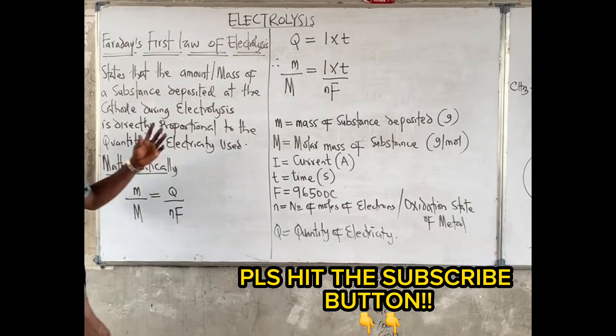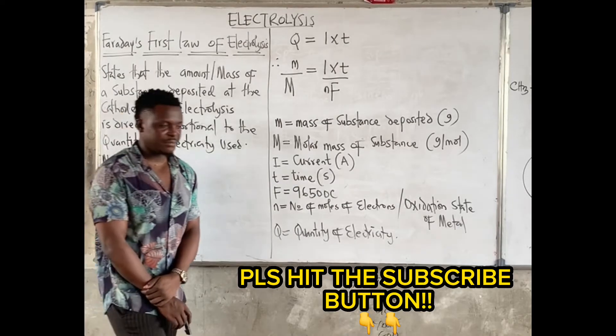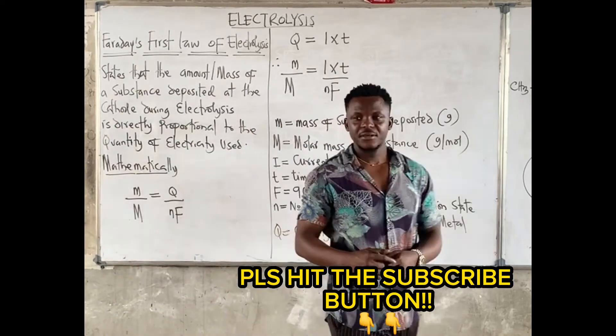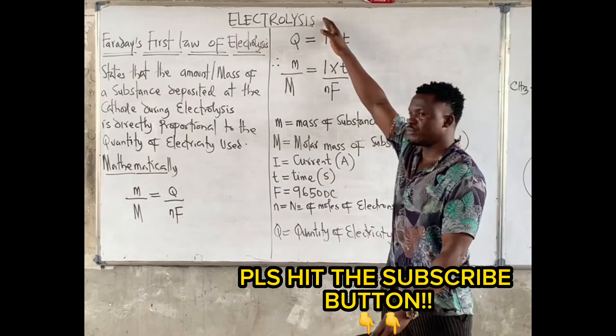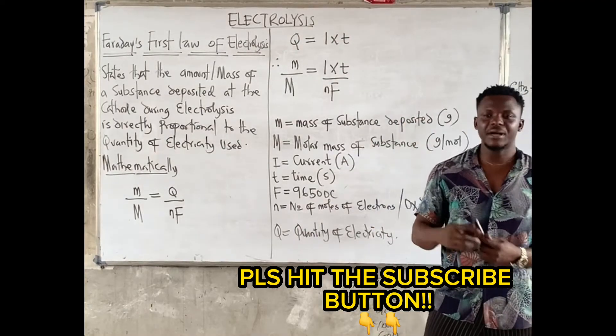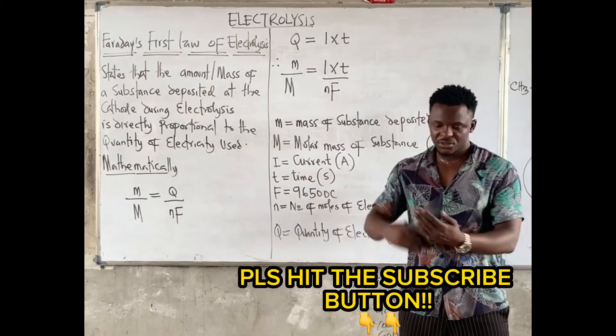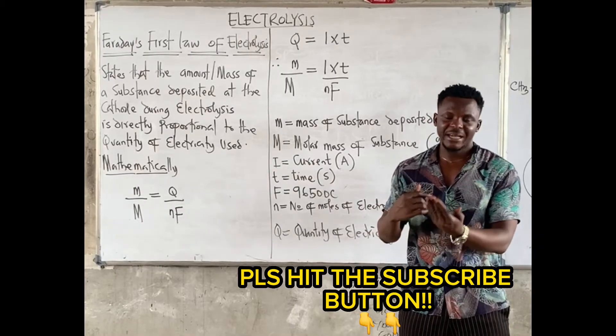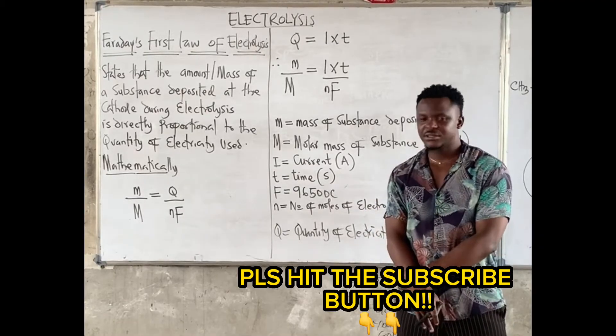Alright, so we want to talk about electrolysis. You might want to ask, what is electrolysis? Electrolysis is a chemical decomposition of a substance by the passage of electric current. We break down substances by just passing electric current through it.